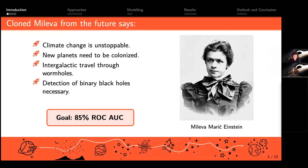We need to reach 85 percent ROC AUC, which is as high as it gets. It's important because we don't want to invest in travel to a black hole and then there is none.